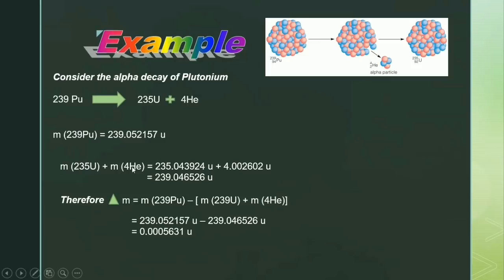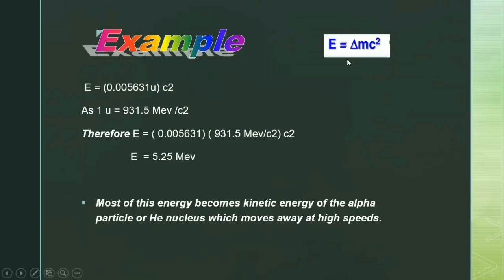The mass of the alpha particle is 4.002602 atomic mass units. Adding together the masses of uranium-235 and the alpha particle gives 239.046526 atomic mass units, which is less than the mass of plutonium. Therefore, the mass defect Δm equals the mass of plutonium minus the combined masses of the products, which comes out to be 0.005631 atomic mass units.